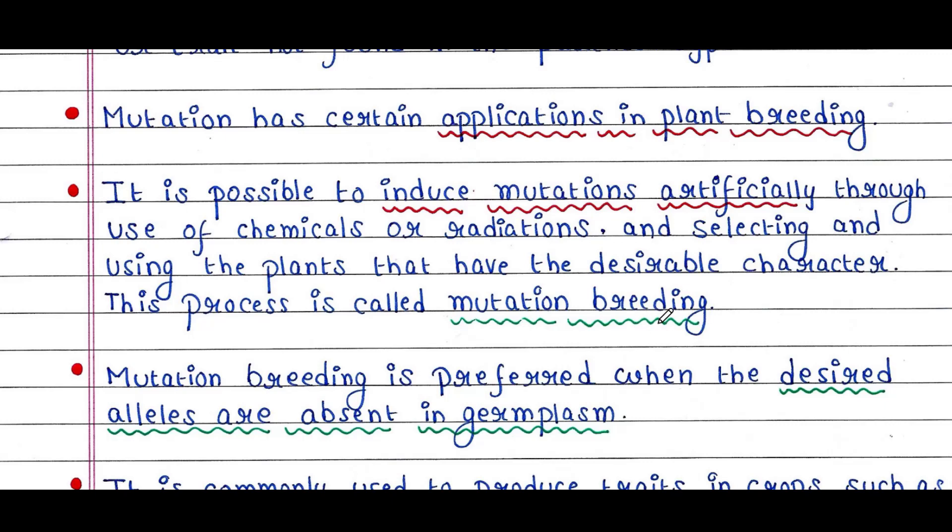Suppose you want a disease resistant plant. You can induce an artificial mutation to alter a particular gene of the target plant that was previously responsible for the susceptibility to the disease. The gene is now mutated and the plant becomes disease resistant.